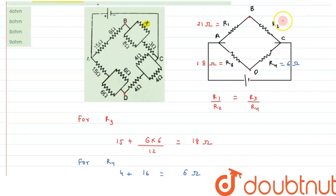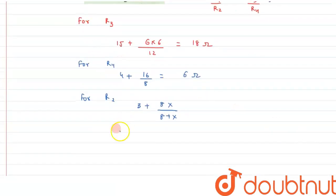If we substitute it over here, we can say the value of R2 is 3 plus 8X upon 8 plus X. So now we will be applying this balance condition. We can say under balance condition, and why it is balance, as we have discussed, the potential difference between B and D is zero.